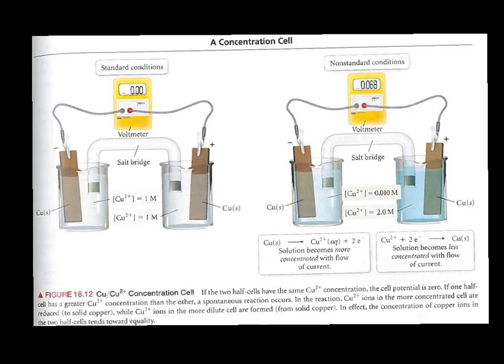However, if we use a copper anode and a copper cathode, but we change the concentration of the copper ions in solution so that on this side we have 0.01 molar and over here we have 2 molar, then we can generate a potential difference between these two half cells. Let's take a look at what that difference would be and how this can work.